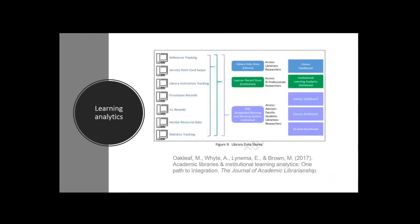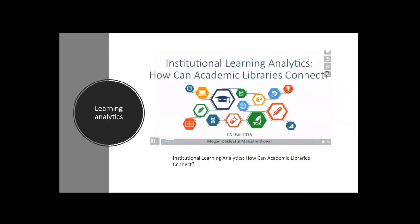Lastly, an area that a lot of universities are looking at is learning analytics. This goes beyond just correlation studies and focuses at the institution level. Library data can be used together with data from Blackboard to try to create interventions — for example, predicting in advance that a certain student requires more help. This is an area libraries cannot go alone. JISC is also working on learning analytics in the UK. That's all I have for today — thank you very much for having me.